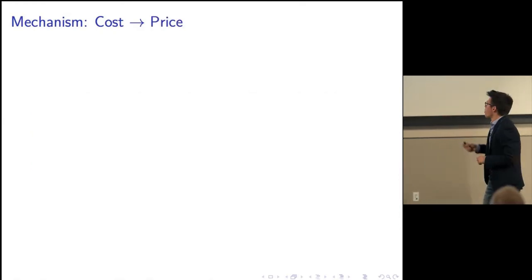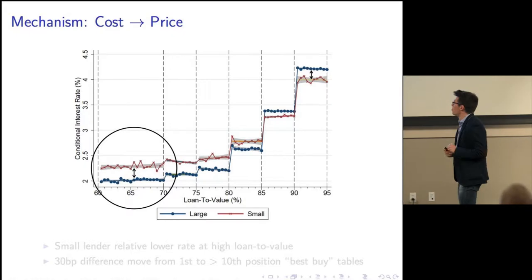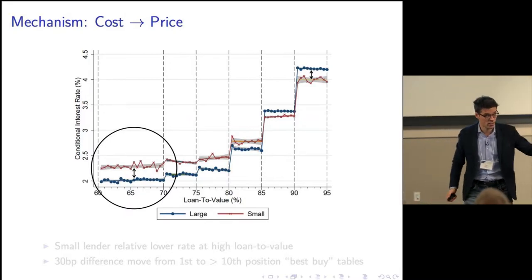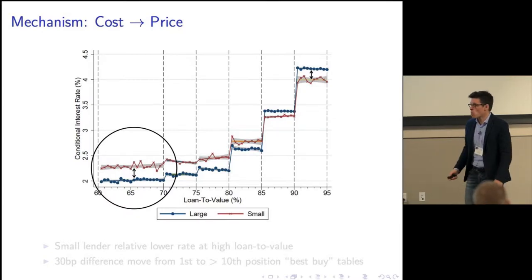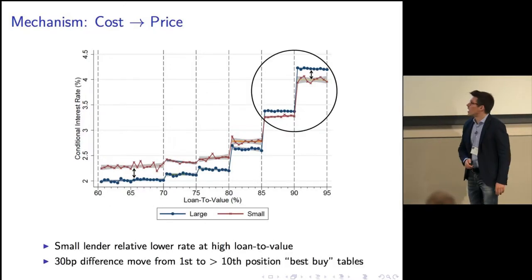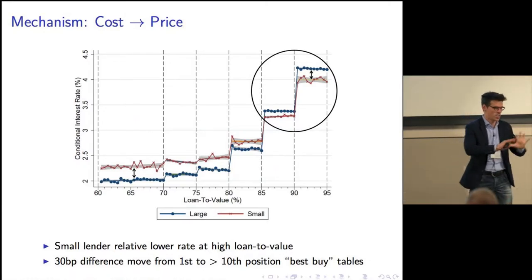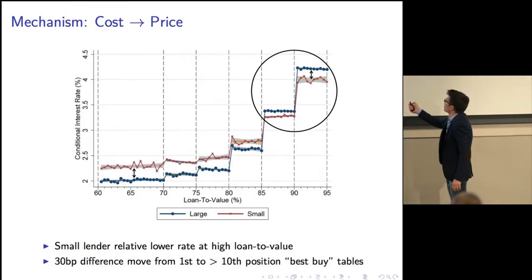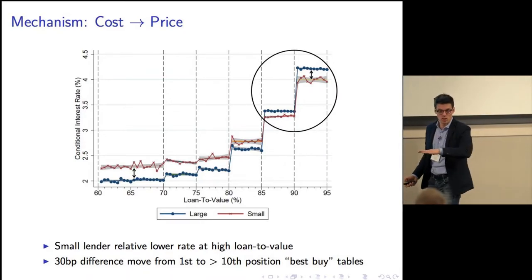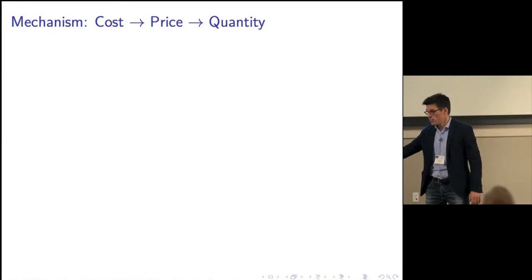First I want to show the simple mechanism. I've shown potentially different costs — now let's see if there is a difference in pricing. I plot as a function of loan-to-value the conditional interest rate, controlling for borrower characteristics, showing the difference between large and small banks. At low leverage, the large bank is very competitive and offers a good deal. Moving up the distribution, the gap shrinks, and at high leverage it's actually the small banks offering a more competitive deal. This is just reduced-form evidence — no claim of causality. The difference is about 30 basis points, but in UK best-buy tables 30 basis points moves you from page one to beyond position ten.